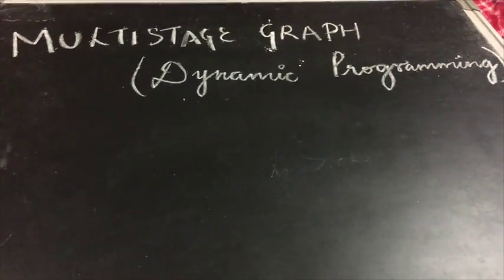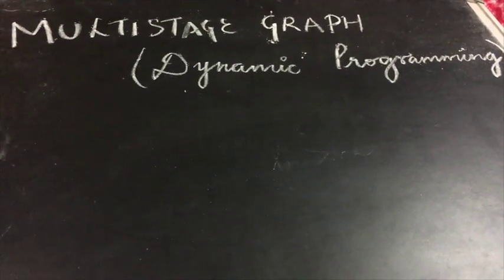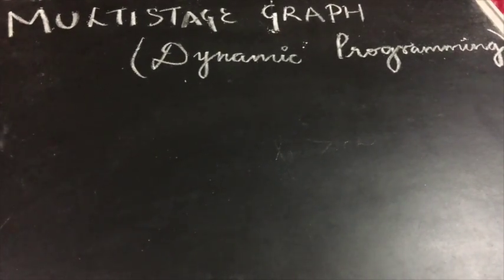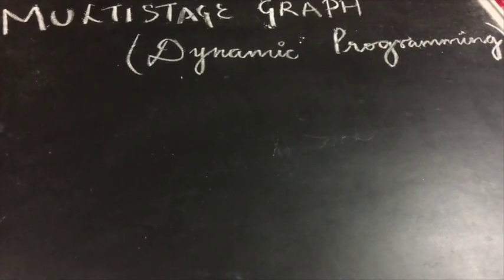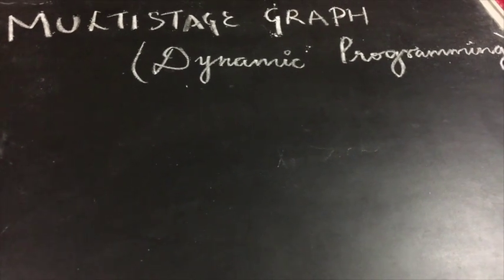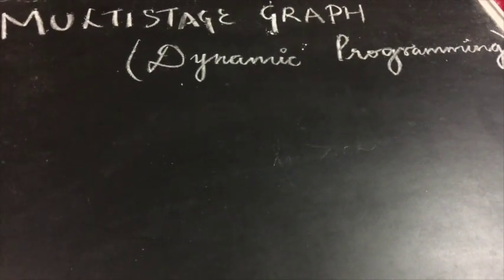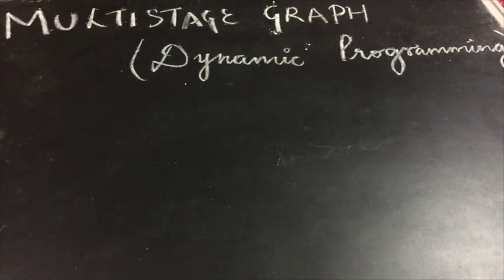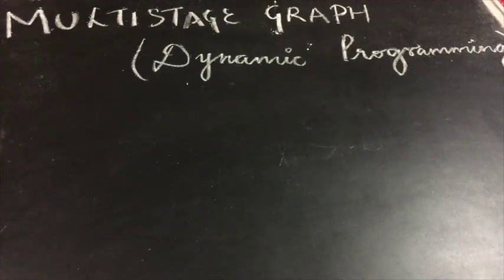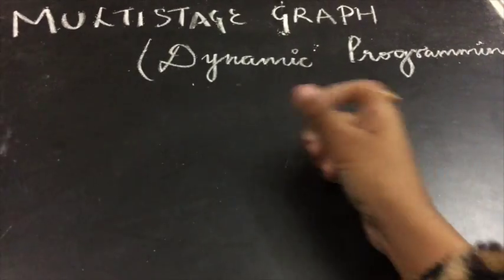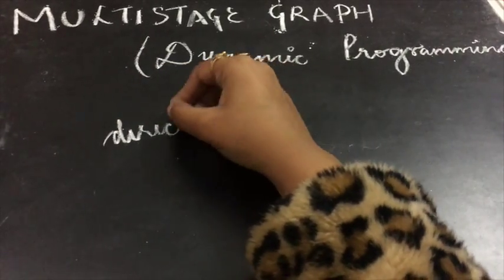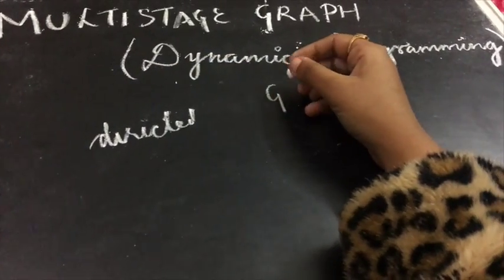Hello everyone, today we're going to discuss the multistage graph, which is an application of dynamic programming. Dynamic programming is one in which when we reach a certain stage, we take a decision, and on the basis of that decision we move further — that is, the solution is a sequence of decisions.